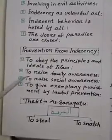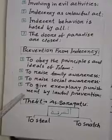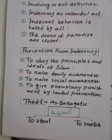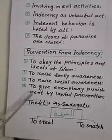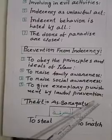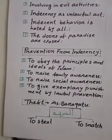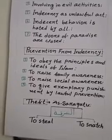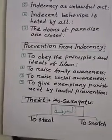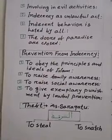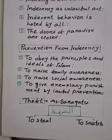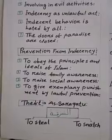Point number four: if anyone did not keep himself or herself from indecent activities, for him or her, give exemplary punishment by lawful prevention. That means if anyone is involved in any kind of indecent activities after getting these types of warnings, he or she has to receive some punishment so that nobody dares to do these types of activities again. I have now completed the prevention from indecency.